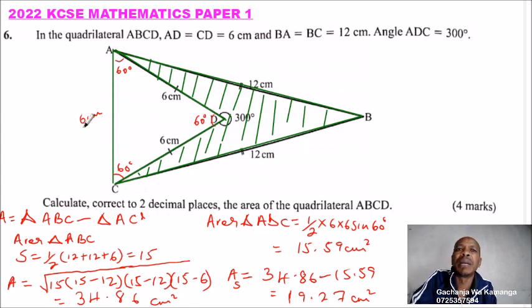So you'll be able to get a mark for this, for getting the area there, for getting the area of this one, that is it, and for getting here you get, I think here you get one area of the big triangle, area of the small triangle, get the difference, and you get the mark for the answer.